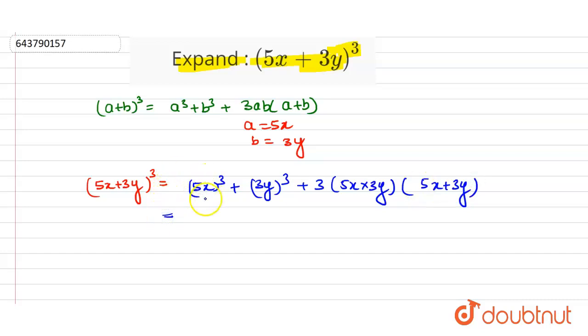Now on solving further we will get 125x³ + 27y³ + 45xy into (5x + 3y).